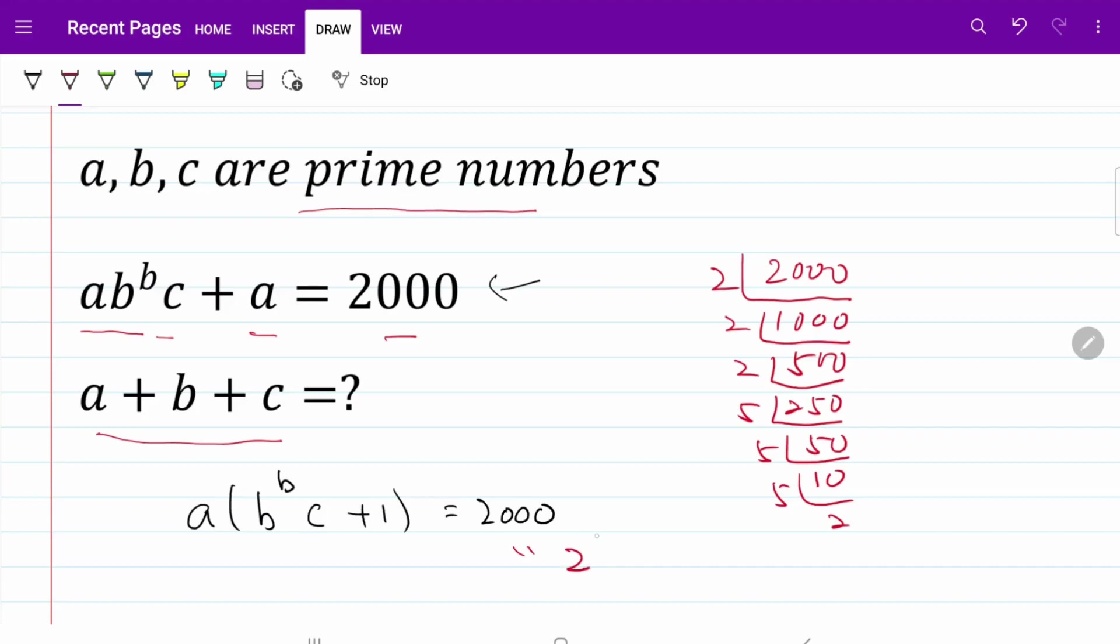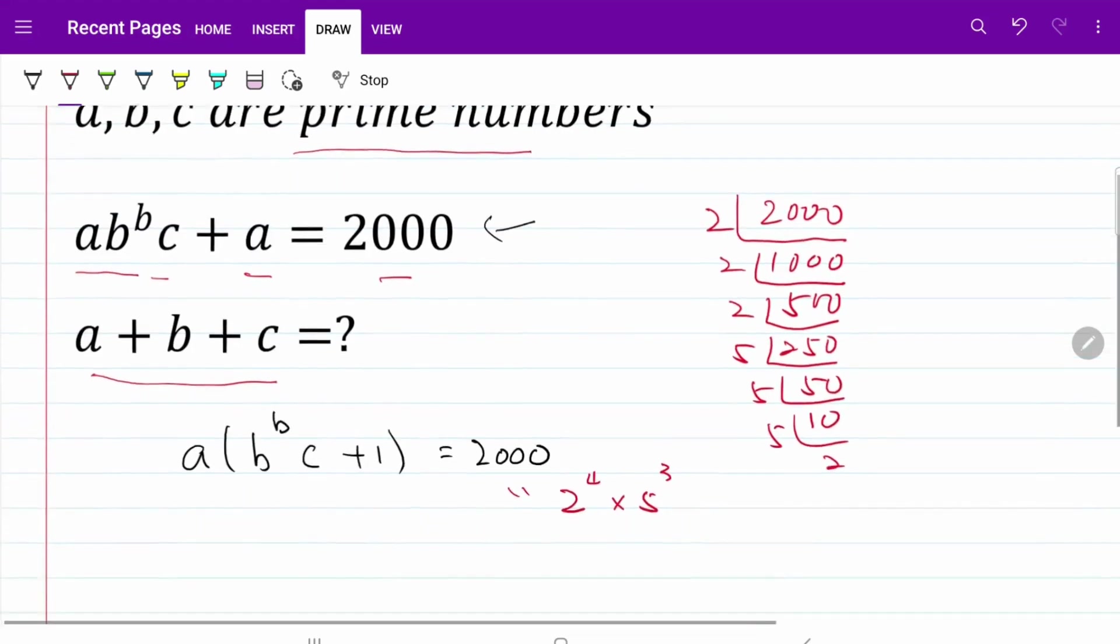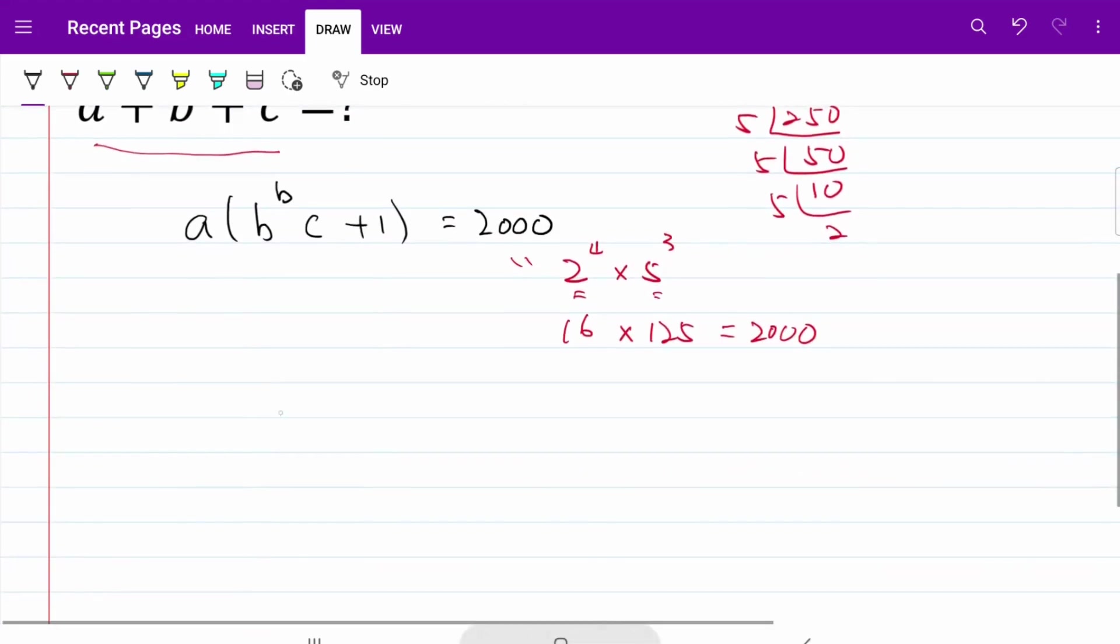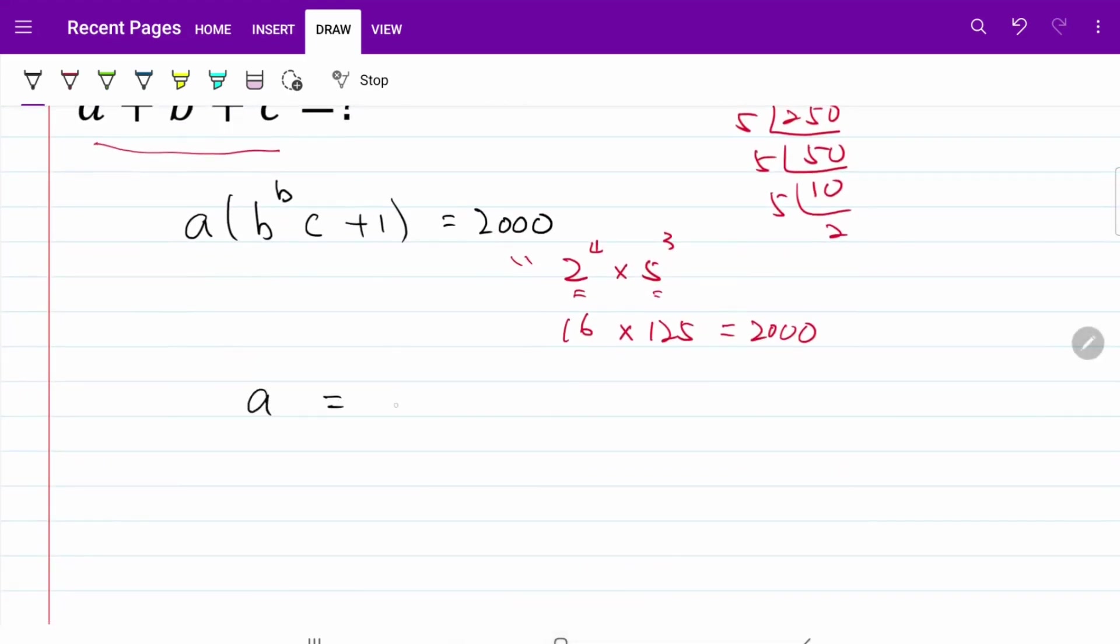If I double-check my answer, I have 16 multiplied by 125, which is equal to 2,000. I have now established 2 and 5 to be the factors of 2,000, and both of which are prime numbers. So in other words, I can safely conclude that a is equal to either 2 or 5. Let's consider the first scenario, a is equal to 2.